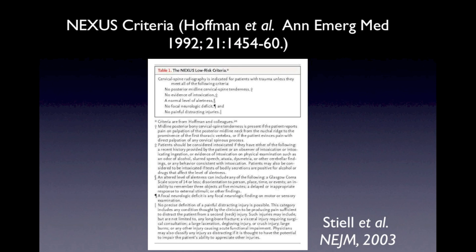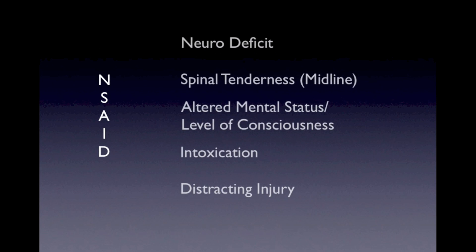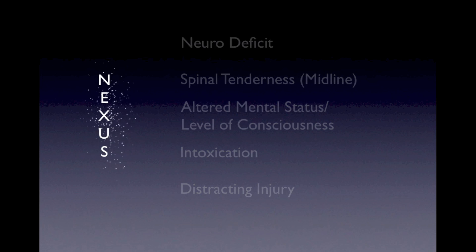Here are the NEXUS criteria along with the fine print — press pause and read over these at your own leisure. Many people use the NSAID mnemonic to remember this, but the problem is that you have to remember that it exists. So I prefer to use a mnemonic that's easy to pull up when you know you need it.